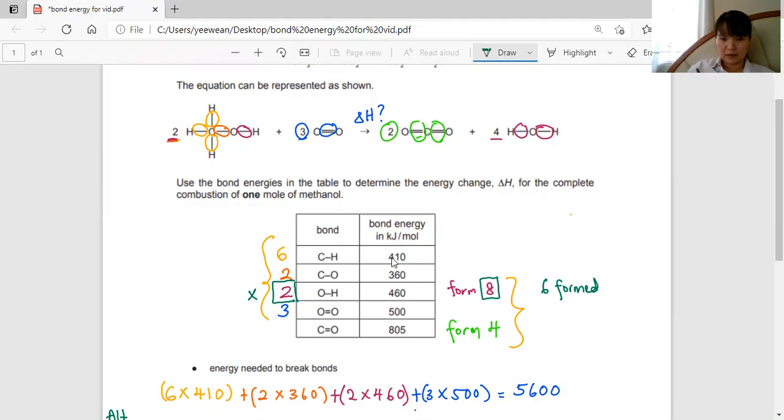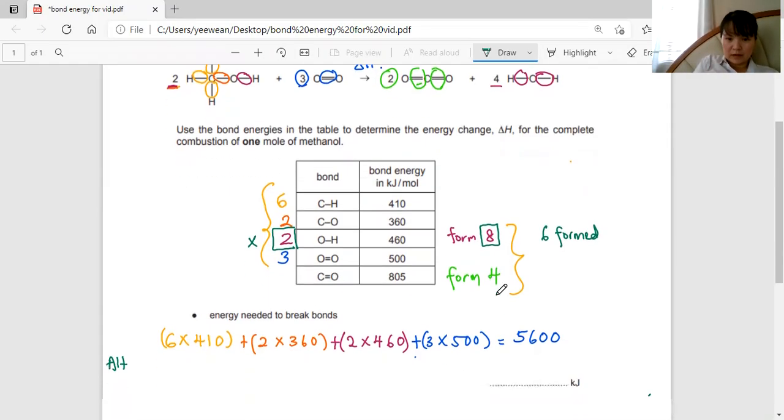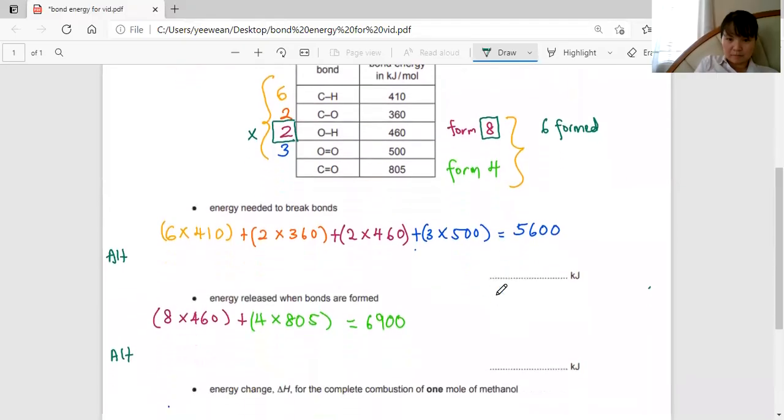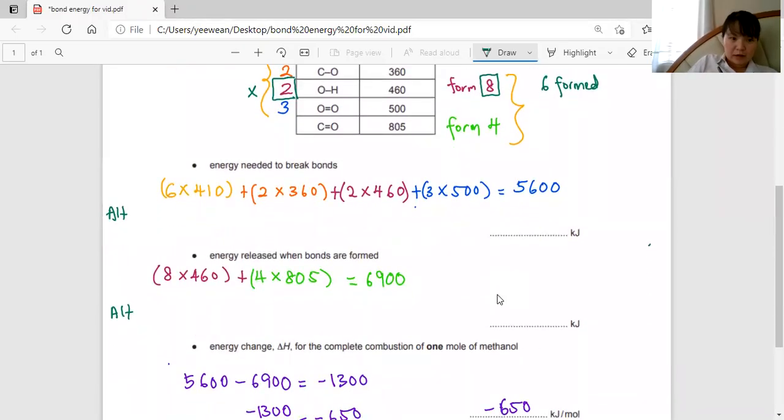So if we were to do that working, the alternative, I'm going to repeat this. Six times 410 and two times 360, no O-H bonds are broken, three times 500. So my bonds broken is now 4680.